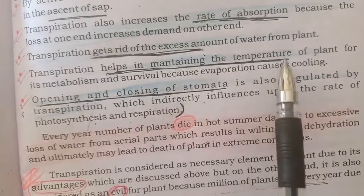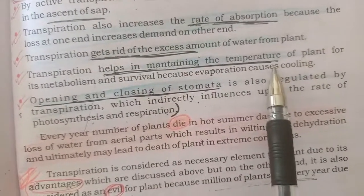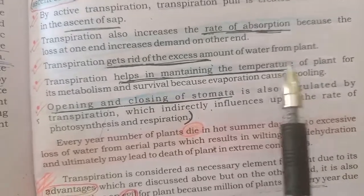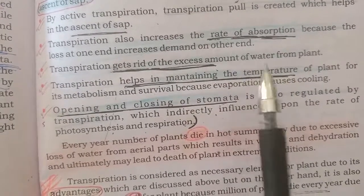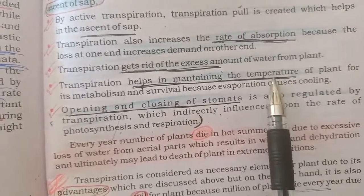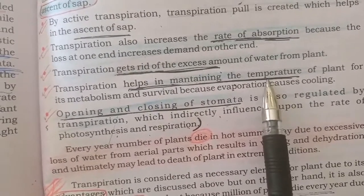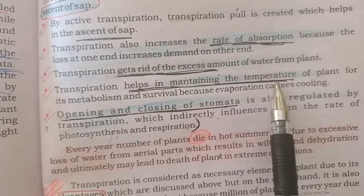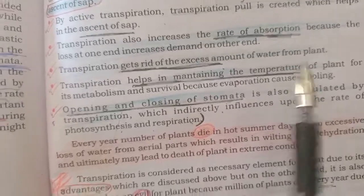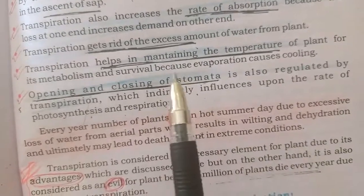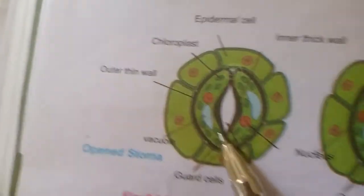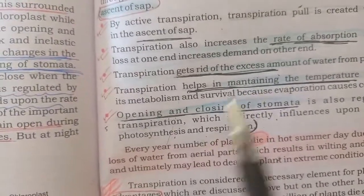Fourth point: transpiration helps in maintaining the temperature of plant. اگر plant کو پورے دن دھوپ میں رکھا جائے تو continuous transpiration کی وجہ سے leaves ٹھنڈی رہتی ہیں — جلتی نہیں، خراب نہیں ہوتیں، wilt نہیں ہوتیں — لیکن اس کے لیے ضروری ہے کہ plant کو پانی دیتے رہیں۔ Fifth point: opening and closing of stomata — جتنا زیادہ پانی ہوگا guard cells زیادہ turgid ہوں گے، stomata open ہوگا، اور transpiration rate increase ہو جائے گا۔